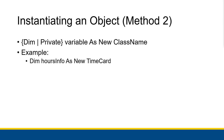The second method is what we saw with random objects: Dim or Private variable As New ClassName. When you say 'As New ClassName,' you're not just saying the variable is of type ClassName, but you're also instantiating that variable with a new object of that class right away. An example would be: Dim HoursInfo As New TimeCard — which creates an object of type TimeCard and puts it into the variable HoursInfo.